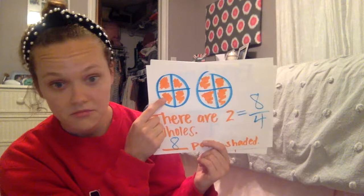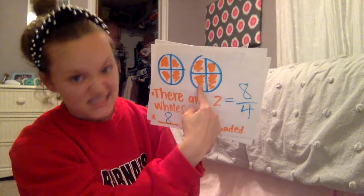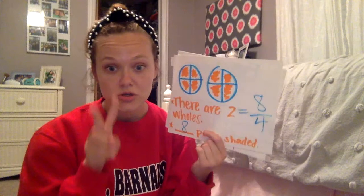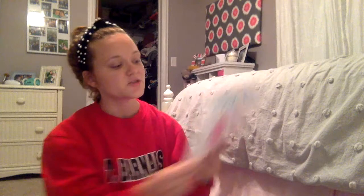Let me show you a little closer. This is a fourth, that's a fourth, that's a fourth, that's a fourth — that's four-fourths, which equals one. This one: five-fourths, six-fourths, seven-fourths, eight-fourths, which equals two. So two is also, in fraction form, eight-fourths or eight over four. Does that make sense?